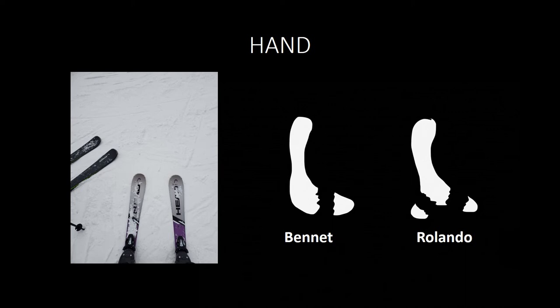Kanavel's sign is for flexor tenosynovitis and includes: fusiform swelling (sausage digit), a finger stuck in a flexed position, pain with extension (the earliest sign), and tenderness along the flexor tendon. A high-pressure injection injury, such as from a paintball gun shot to the hand, may initially appear as a small wound but can quickly progress to compartment syndrome or ischemia — consult orthopedic surgery. Accidental EpiPen administration into a fingertip is treated with topical nitroglycerin paste and warm water to promote vasodilation. If nitroglycerin is unavailable, choose phentolamine.